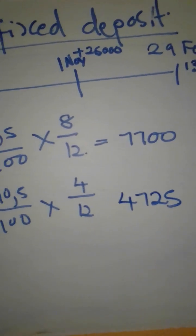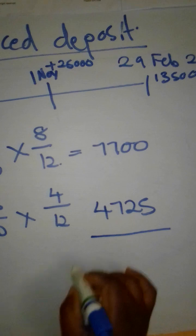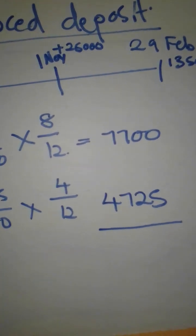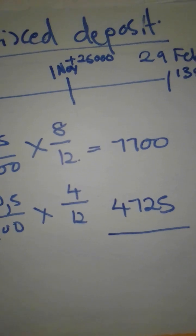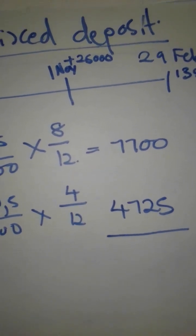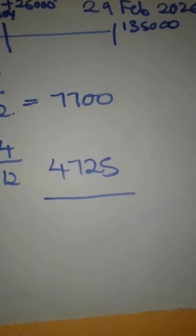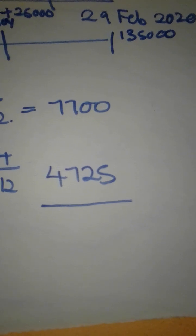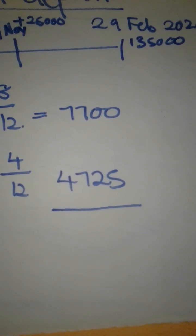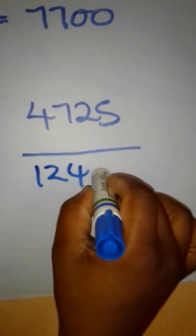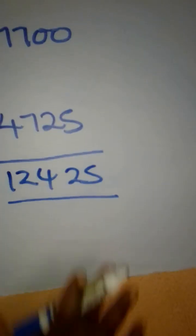You can also check with your calculator there. So now we add the two amounts so that we can get the interest that was actually supposed to be received by the end of the financial year. Because here we can already see that there is an interest on fixed deposit which is already shown, it's $9,050. So anyway, let's do our calculation and find out exactly how much in total was actually supposed to be received. So when you calculate, we are going to say $7,700 plus $4,725, it is actually going to give us $12,425. So this is the total interest that was supposed to be received for the whole year.